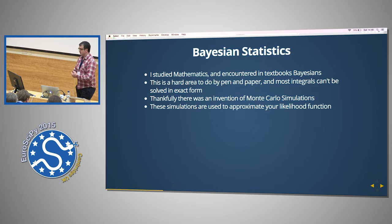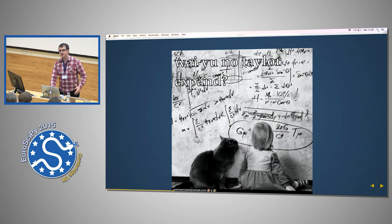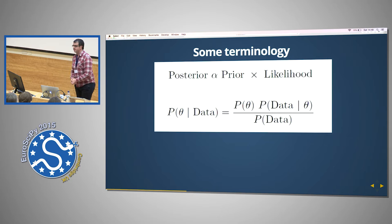So whenever I first encountered Bayesian statistics, like everything I've ever encountered in statistics, I was terrified and put off it for about two years. We should probably do something about that teaching wise. So most integrals can't be solved by exact form. Thankfully, there was a historical invention of Monte Carlo simulations, and there's been a lot of development in that. And these simulations are used to approximate your likelihood function. Of course, you're probably a bit like me, and this is what you're thinking right now.